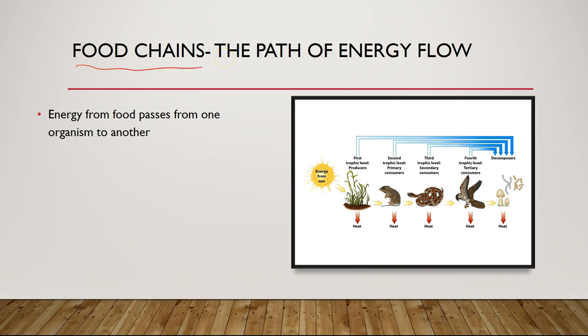A food chain is a simplified version of how energy makes its way into ecological systems and then gets transferred and eventually becomes waste or heat. Energy from the Sun is what's used to provide food for our plants — the plants use energy from the Sun to convert carbon dioxide and water into glucose and oxygen.